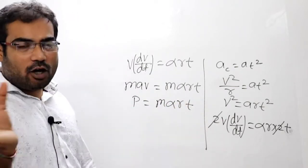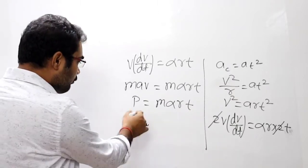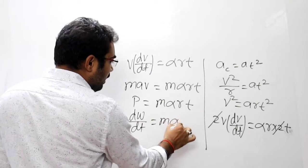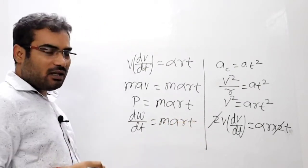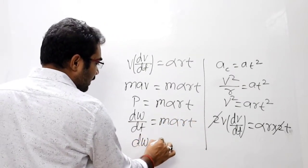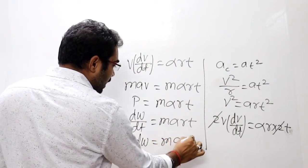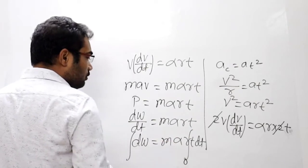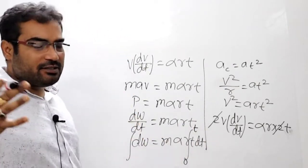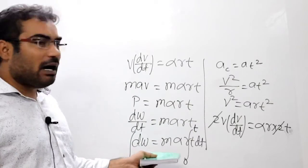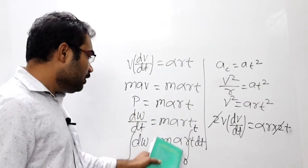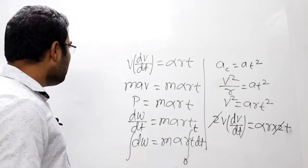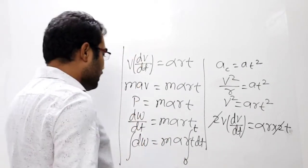Instantaneous power - rate of doing work. Power kya hota hai - rate of doing work. Toh isko kya likh sakte hai: dW by dt, and that is equal to M alpha R T. dW ka value: dW equal to aa jayega M alpha R T dt. Integration kar dijiye zero to T time. First T time ke liye power, average power calculate karna hai, toh zero to T, toh work nikal jayega.